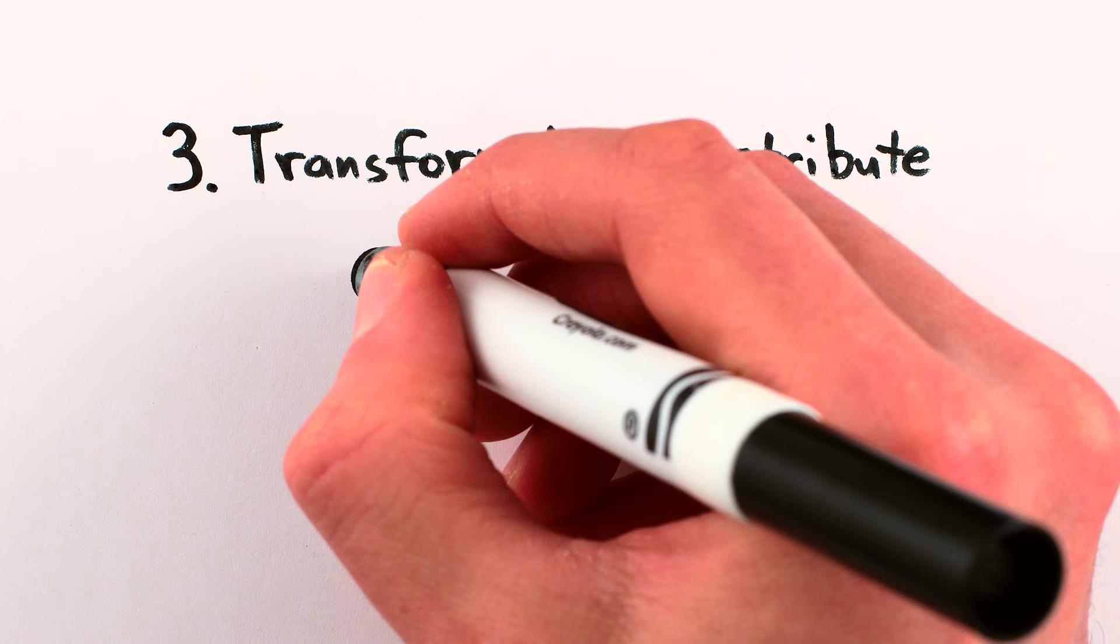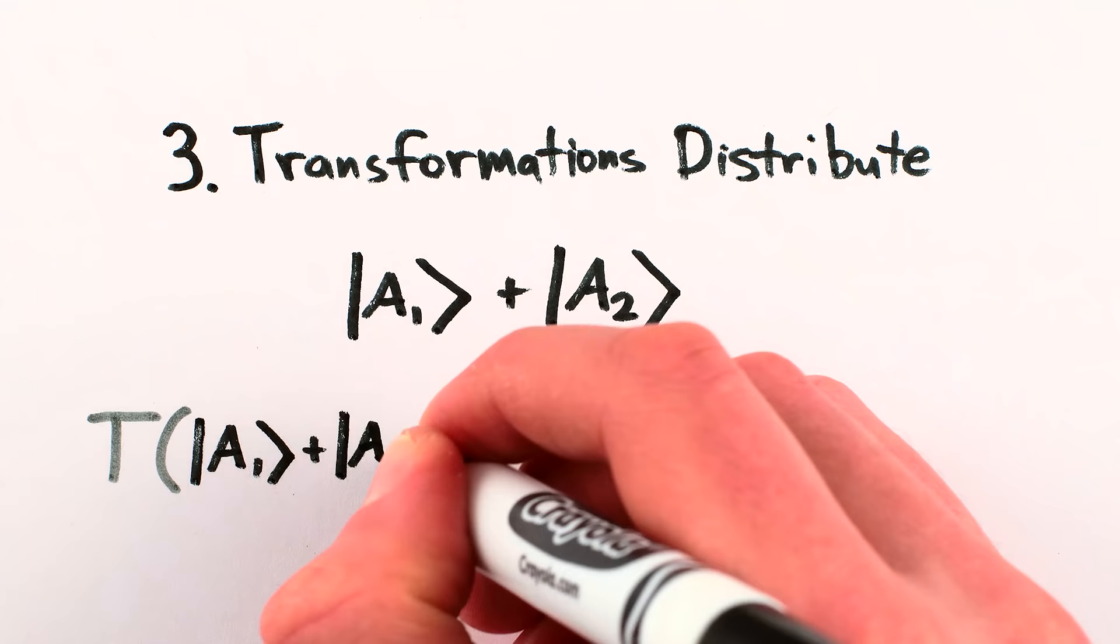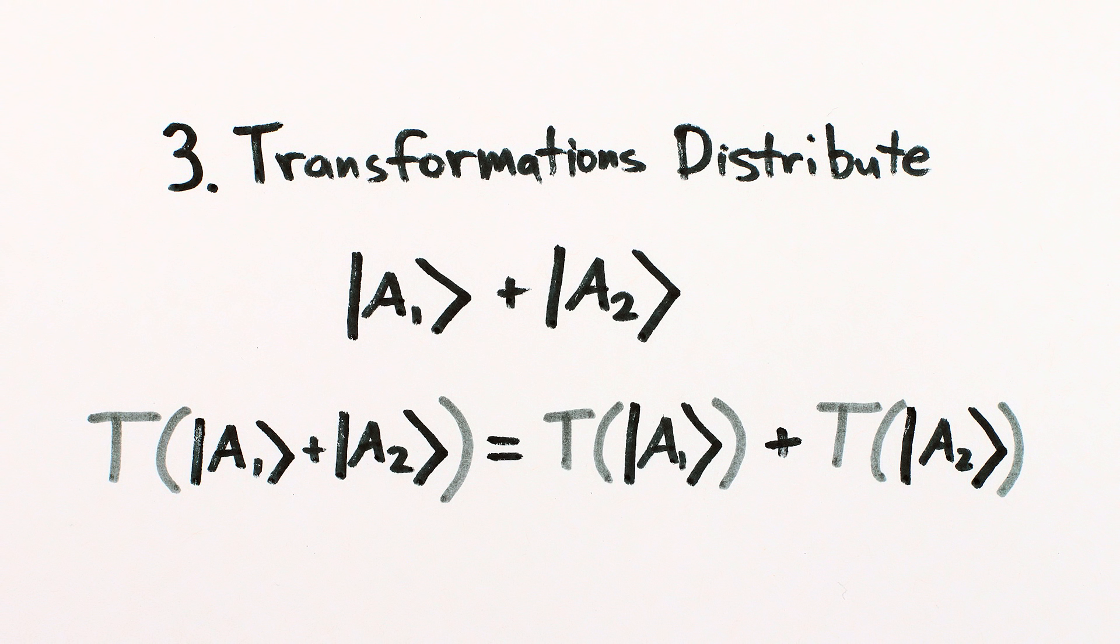In summary, when you have a superposition, aka a sum of several parts, any change or transformation of the sum of the parts is equal to the sum of the transformations of the parts, whether that transformation is a rotation, a movement, or even an entire hypothetical cloning process.